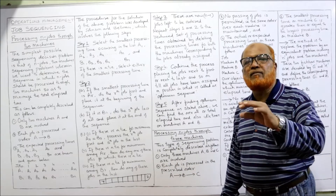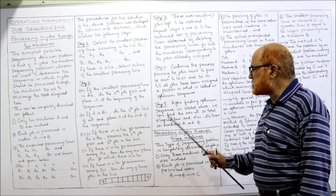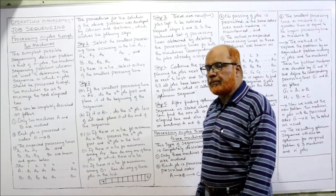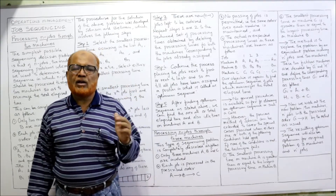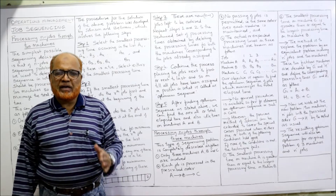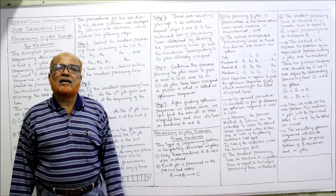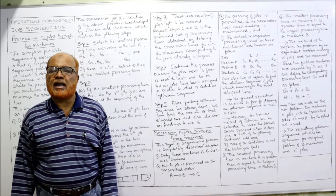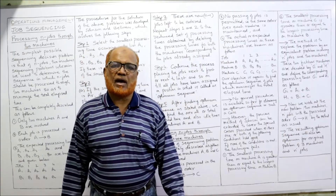Step 4: Continue this process until all jobs have been assigned a position, giving us the optimum sequence. Step 5: After finding the optimum sequence, we calculate the total elapsed time — the time from the beginning of the first job to the ending of the last job. We can also find the idle time of machine A and machine B during the total elapsed time.